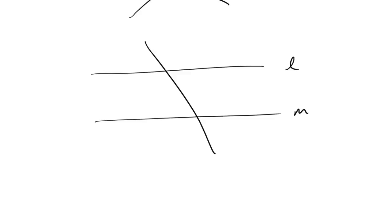One other piece of information has to do with parallel lines. If I draw two parallel lines, L and M, and then cut them with another line — called a transversal — I create pairs of equal angles. There's fancy language: alternate interior angles, corresponding angles, alternate exterior angles. But the main thing to remember is that the acute angles equal the other acute angles, and the obtuse angles equal the other obtuse angles.